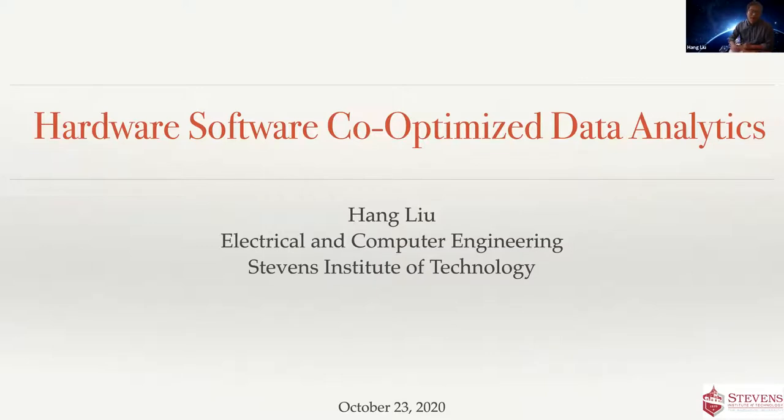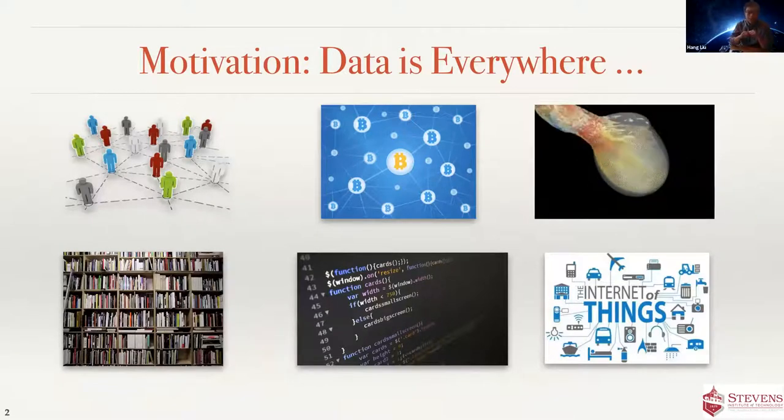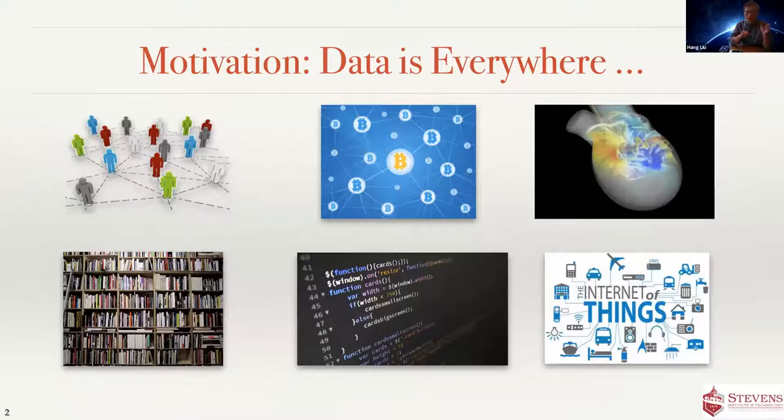When I'm saying hardware and software, mainly I'm talking about the processors or computing systems. There's two components: first is the systems, second is the data. Let's see data first, which is closer to all of us.